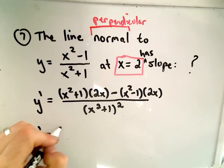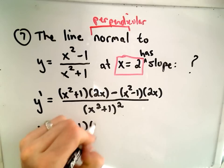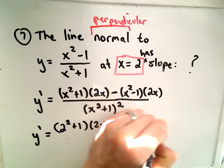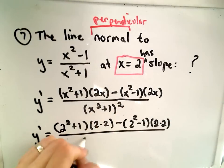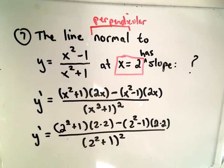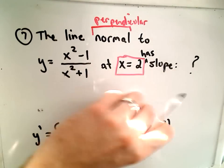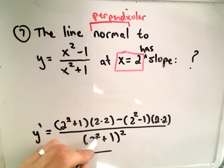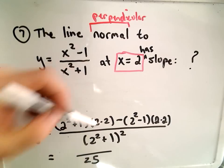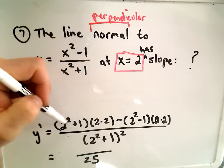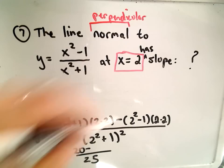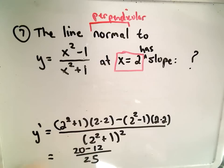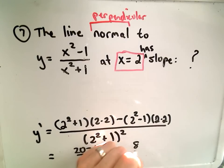So 2 squared — I'm just plugging in 2 everywhere: 2 squared plus 1, 2 times 2, 2 squared minus 1, 2 times 2, and then in the bottom 2 squared plus 1 all squared. In the denominator, 2 squared is 4 plus 1 is 5, squared is 25. In the numerator, 5 times 4 is 20, and 2 squared minus 1 is 3, times 4 is 12. So we're subtracting off 12, giving us 8 over 25.